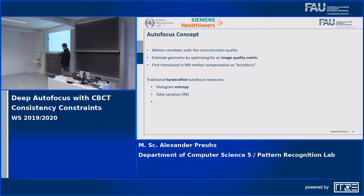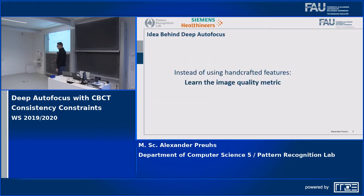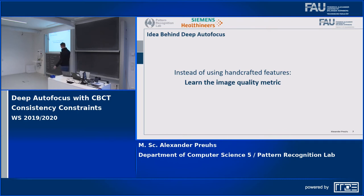Those features are handcrafted. Our idea is instead of using handcrafted features that tell us how a motion-free reconstruction must look, we learn an image quality metric that not only captures the motion-free state but also handles different states of motion, so we can find the optimum from a motion-corrupted scan.